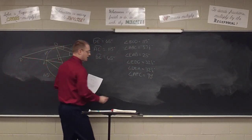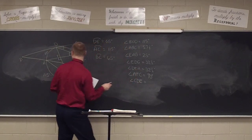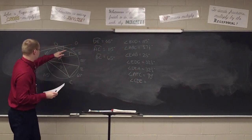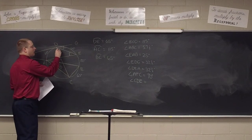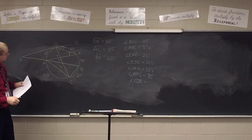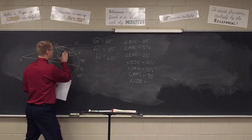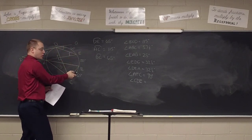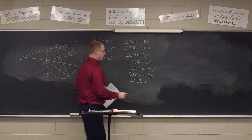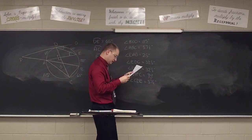Angle CDE — 57 and a half degrees. Again, its arc is all of this — 115 total gives us 57 and a half degrees. Angle BPG — that's all the way up here, the angle formed by the tangent and the secant. Half the difference outside the circle — the first arc is 65, the next arc is 115, so 115 minus 65 is 50, and half that difference is 25 degrees.